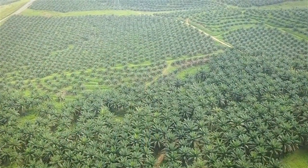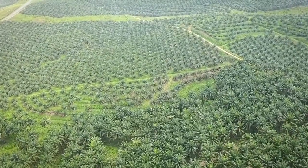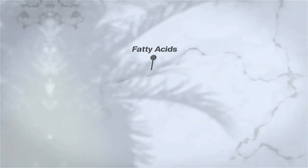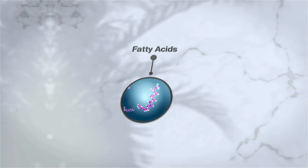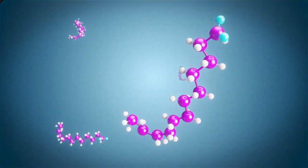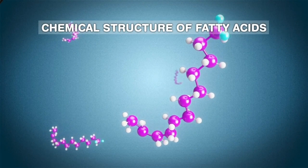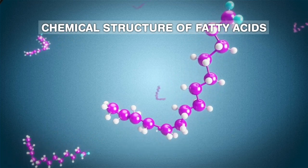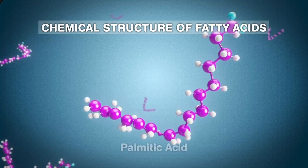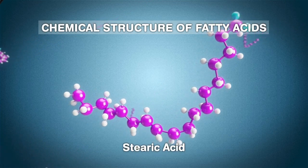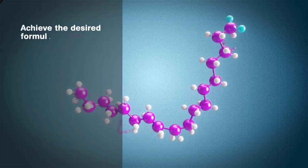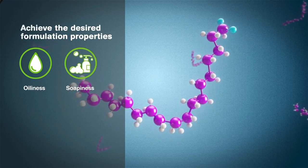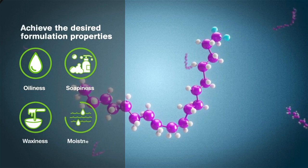It is without a doubt that palm-based oleochemicals are scientifically proven to be a greener alternative. The main components and the building blocks of palm oil are fatty acids — the source of oleochemicals and their derivatives. Examples of fatty acids commonly used in our cosmetic and personal care products are lauric acid, myristic acid, palmitic acid and stearic acid. When added to the product formulation mix, they help achieve the desired formulation properties such as oiliness, soapiness, waxiness or moistness.